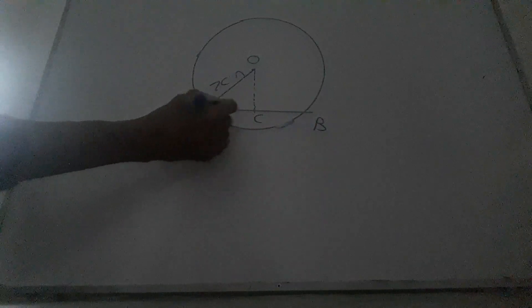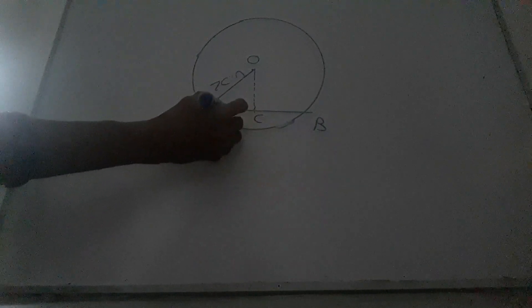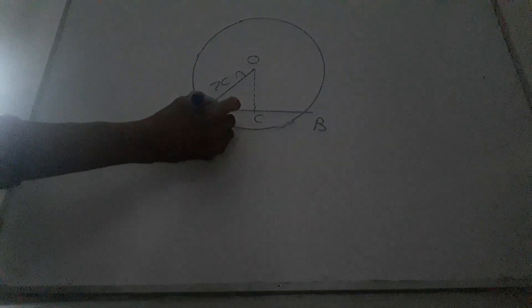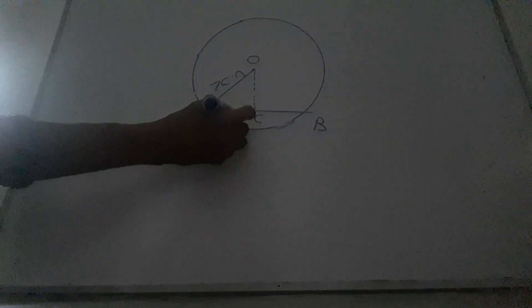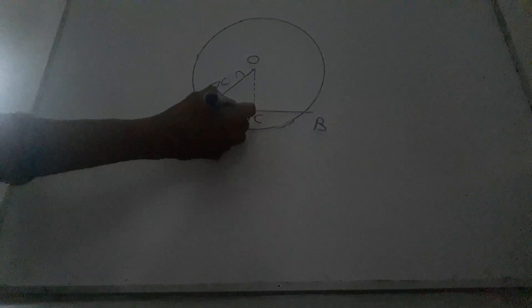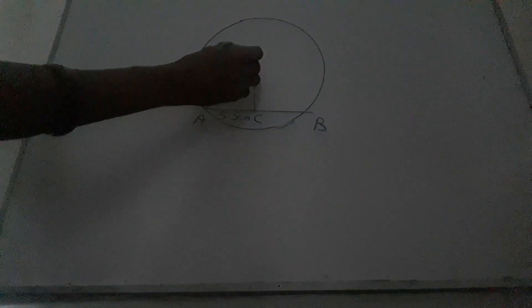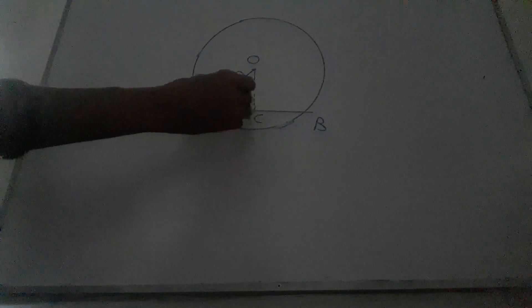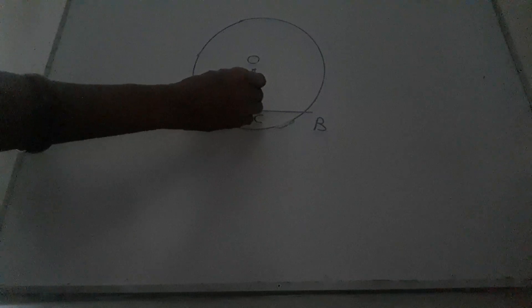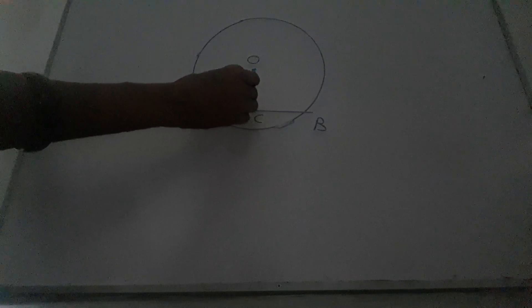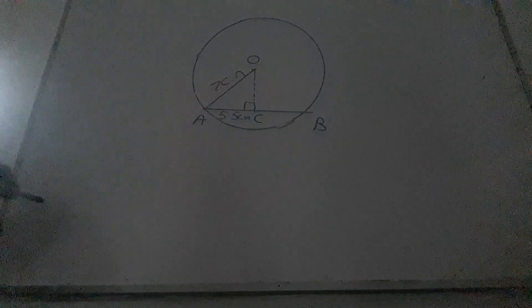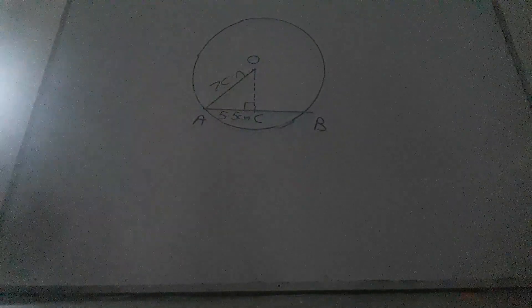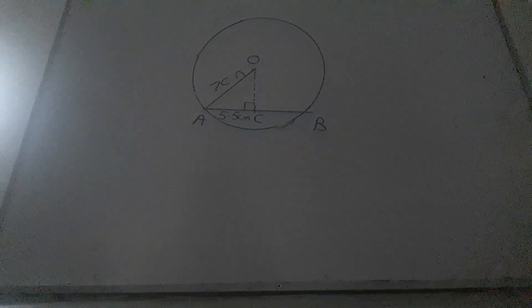C is the midpoint of this chord. The length AC is equal 11 divided by 2 is equal 5.5 cm. We know the line segment joining the center and the midpoint of the chord is perpendicular bisector of this chord. The angle ACO is equal 90 degrees.